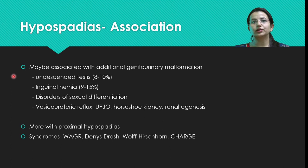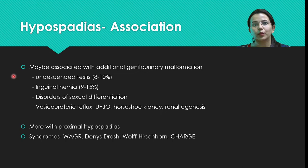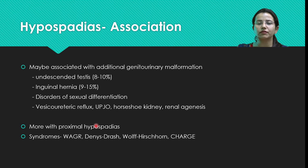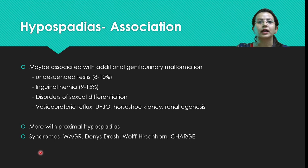There may be additional genitourinary malformations associated with hypospadias. The most common are inguinal hernias and undescended testis. When either of these is seen, the child must be evaluated for disorder of sexual differentiation. Rarely, vesicoureteric reflux, ureteropelvic junction obstruction, horseshoe kidney, and renal agenesis may be seen. These associations are more common with proximal hypospadias.